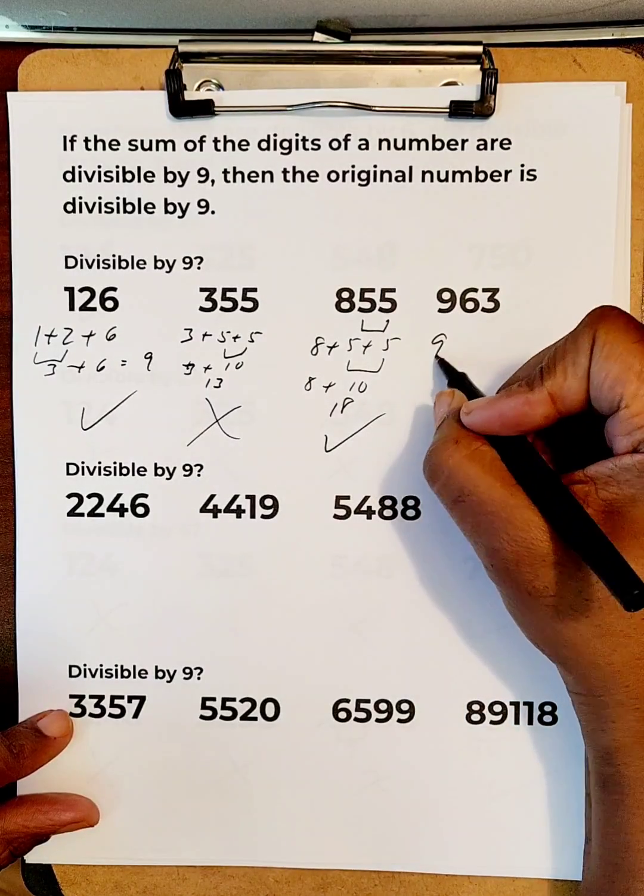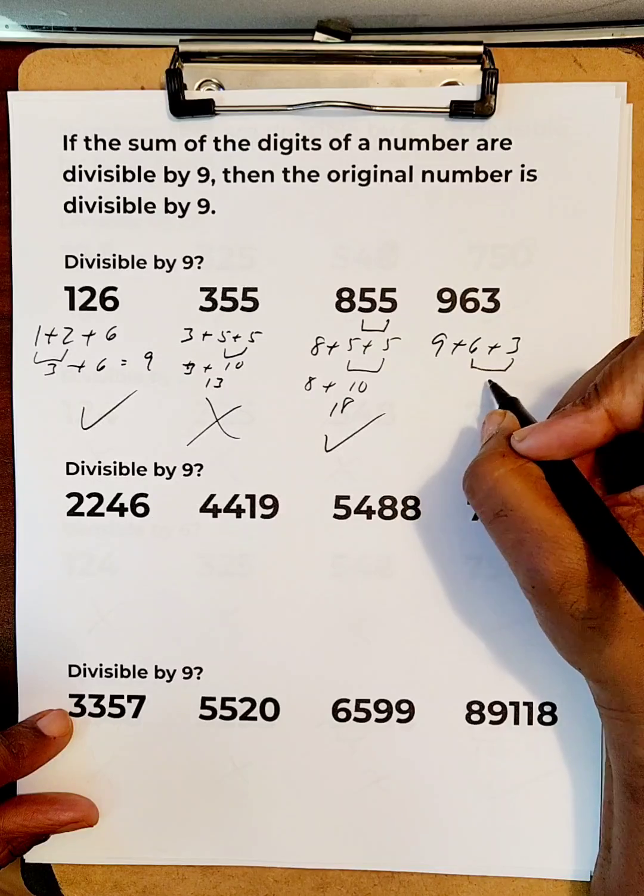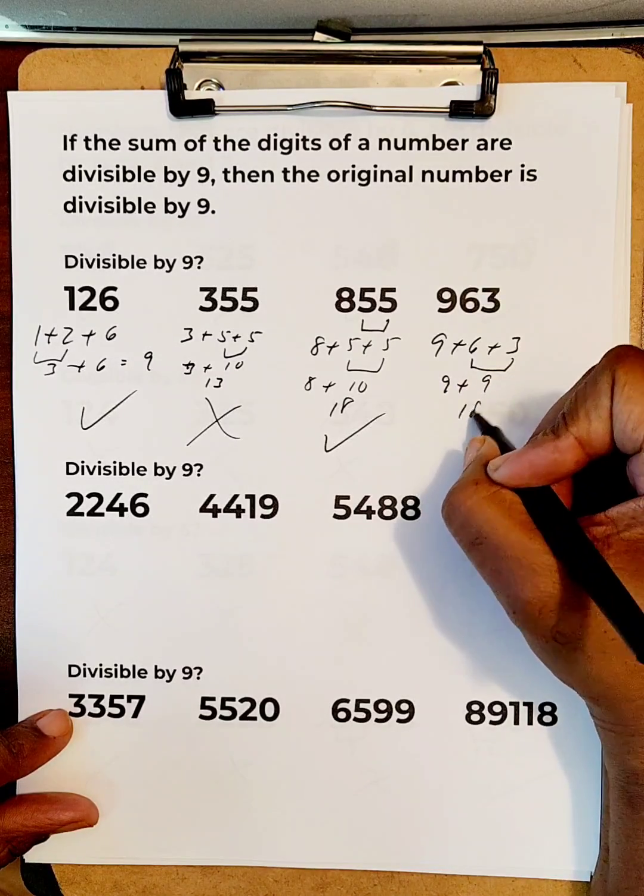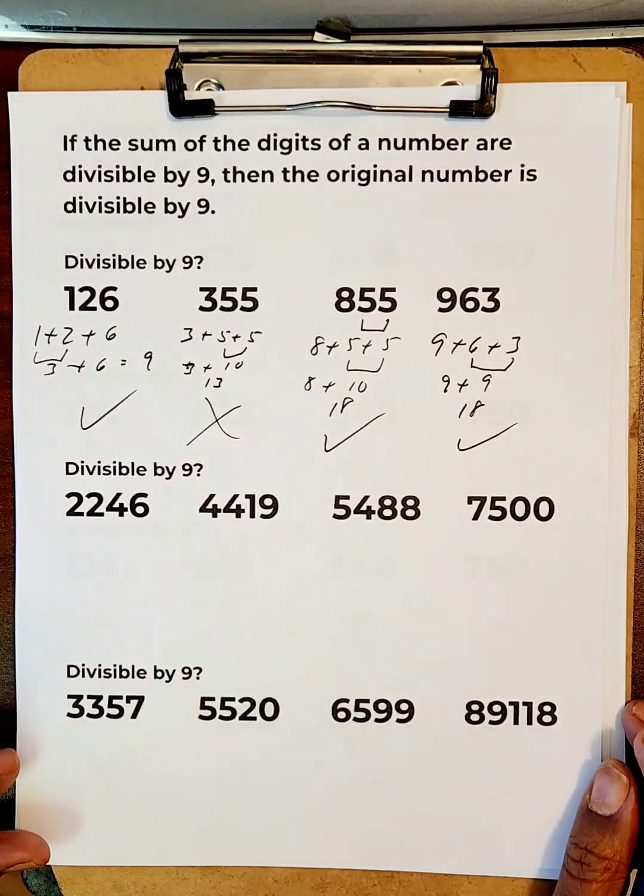And the last one, 9 plus 6 plus 3. Well, 6 plus 3 is 9, and 9 plus 9 is 18. That's in the 9 timetables, therefore this one is in the 9 timetables.